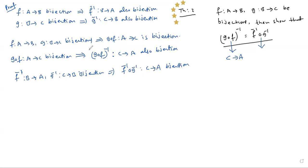LHS and RHS mapping are the same, C→A. First basic point: what is the conclusion for equality of functions? You should prove both functions have the same mapping. G circle F whole inverse and F inverse circle G inverse both have the same mapping, so they are equal.